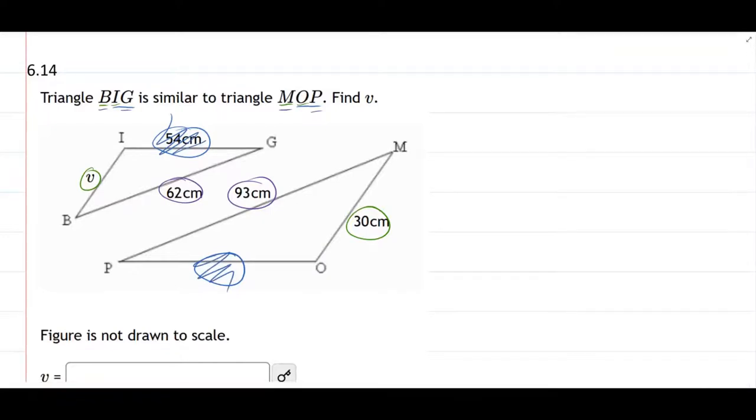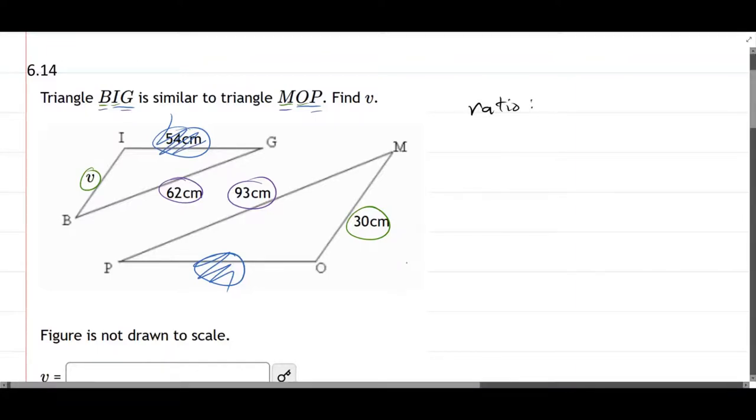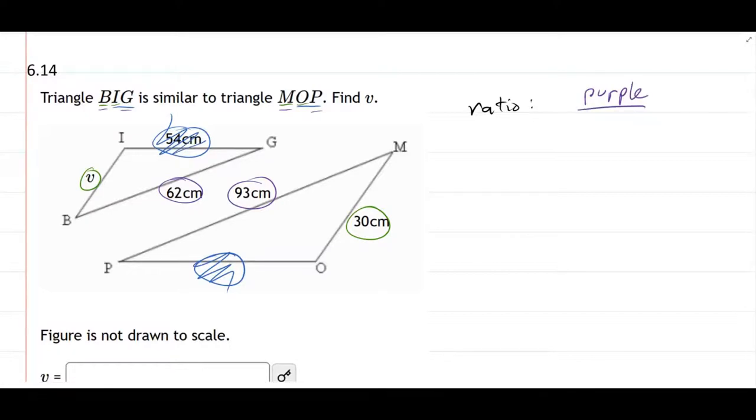So we have the two purples and the two greens, so we're going to set up a ratio. And we'll do the purple divided by the green.